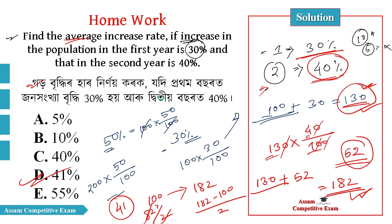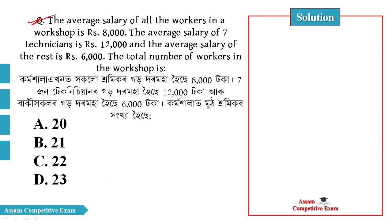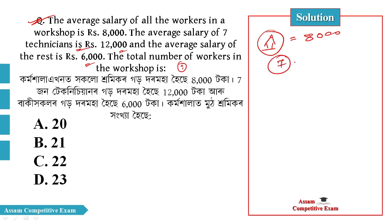Next question: The average salary of all workers in a workshop is 8000. The average salary of 7 technicians is 12000. The average salary of the rest is 6000. Find the total number of workers in the workshop.